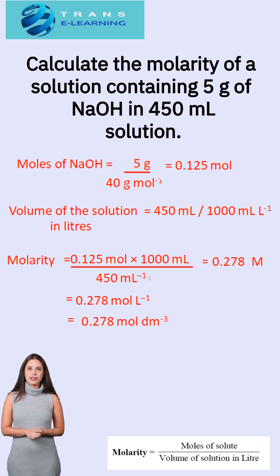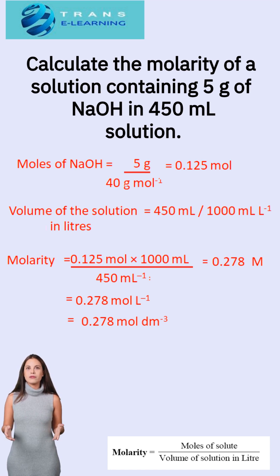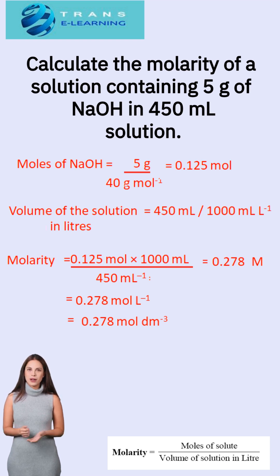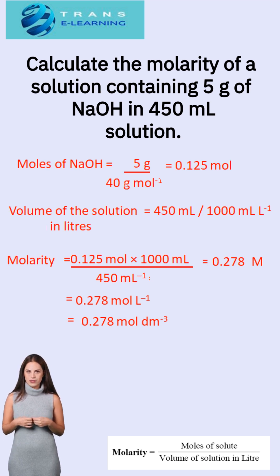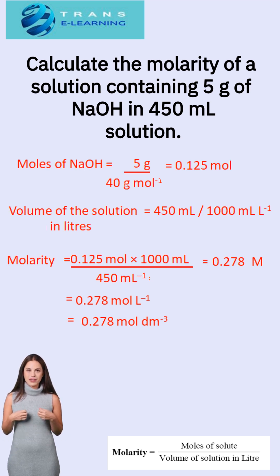Another example: calculate the molarity of a solution containing 5g of NaOH in 450 mL of solution. We first find the number of moles of solute: mass of solute, 5 grams, divided by the molar mass of solute, which is 40 grams per mole — giving 0.125 moles. Then we convert the volume from milliliters to liters by dividing by 1,000. Substituting the values and calculating, we get the final answer as 0.278 moles per liter.